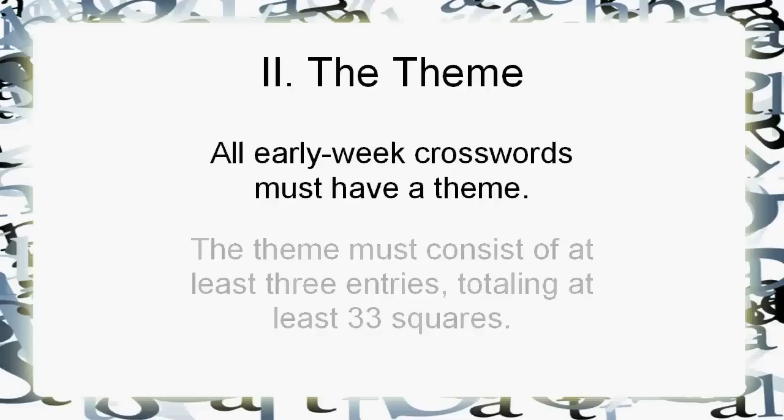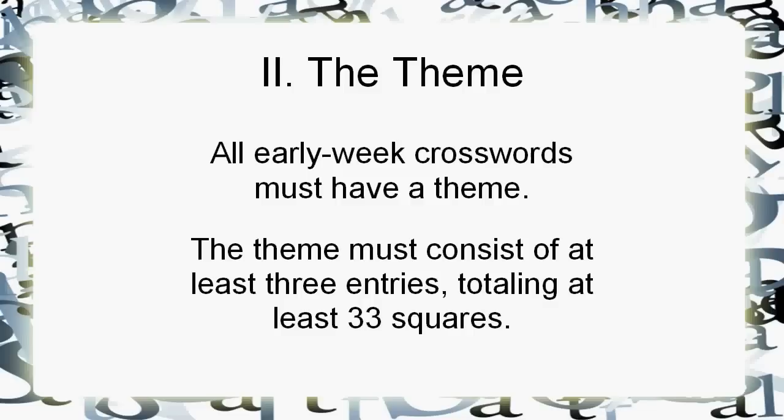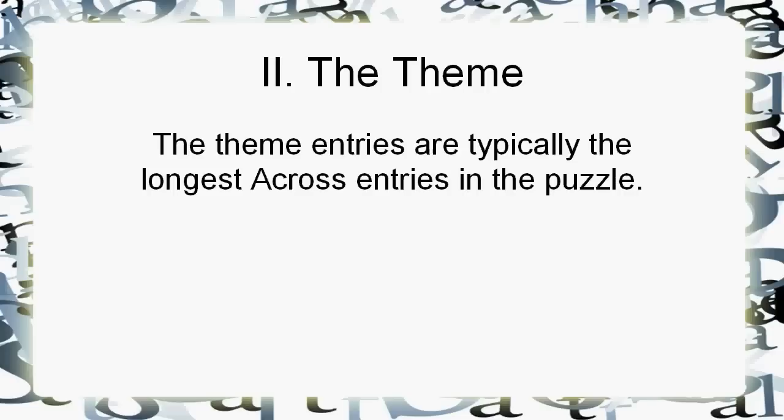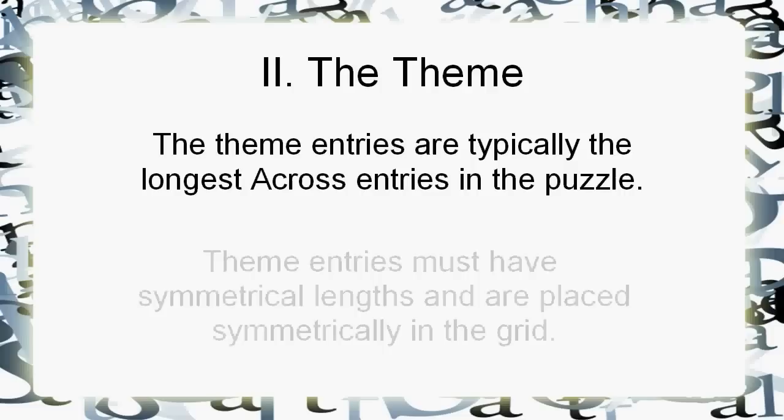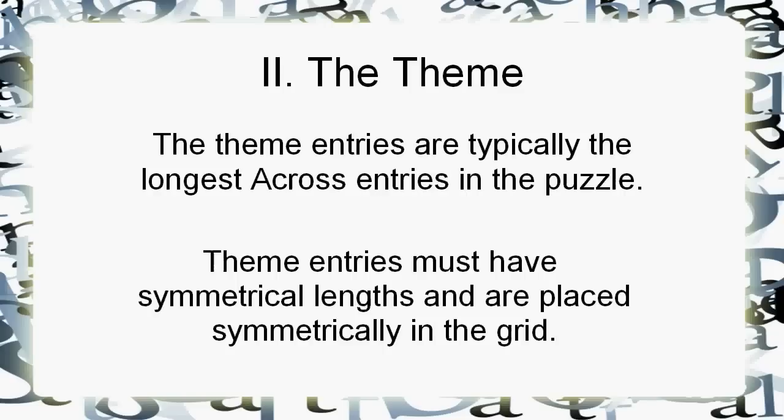About the theme — there's got to be quite a bit of it. The general rule is at least three entries totaling at least thirty-three squares. The theme is usually the longest across entries in the puzzle — it's not always true, sometimes they're down, but for the most part it's the longest across entries. And here's the tricky part: the theme entries have to be symmetric — they have to have symmetric lengths — because the crossword itself is symmetric. The theme has got to fit symmetrically in the grid.